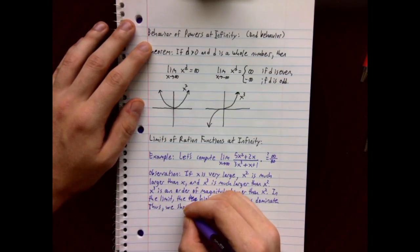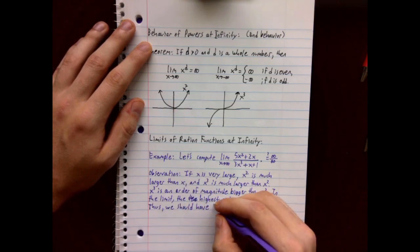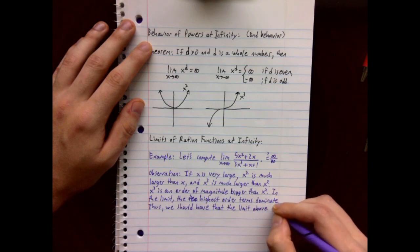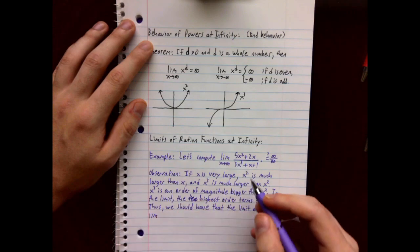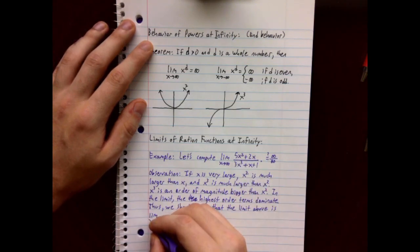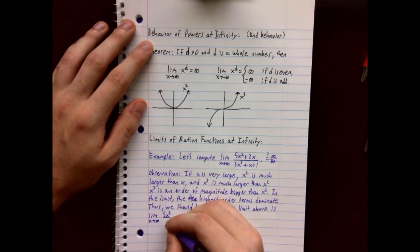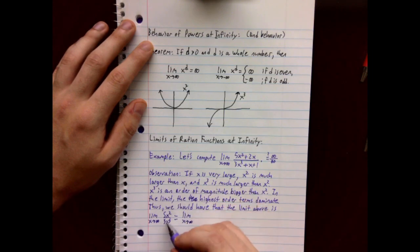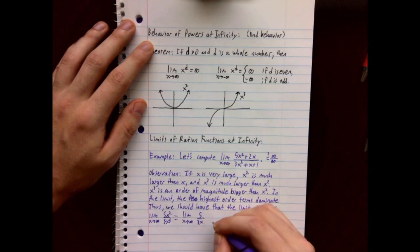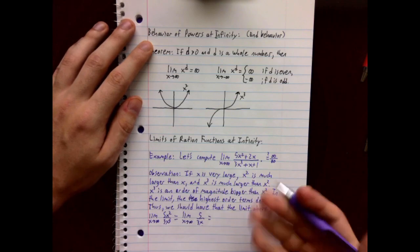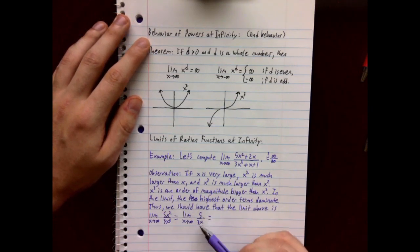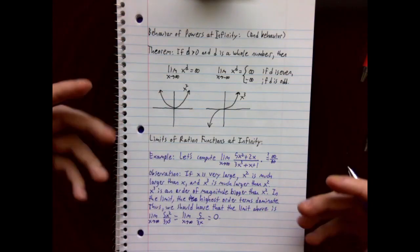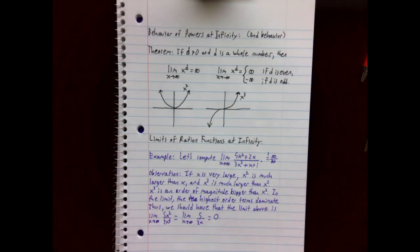Thus, the limit of (5x² + 2x) over (3x³ + x + 1) as x goes to infinity should equal the limit of just the leading order terms: 5x² over 3x³. Simplifying, this is the limit as x goes to infinity of 5 over 3x. As x goes to infinity, we're dividing by a larger and larger number, so this is just 0.